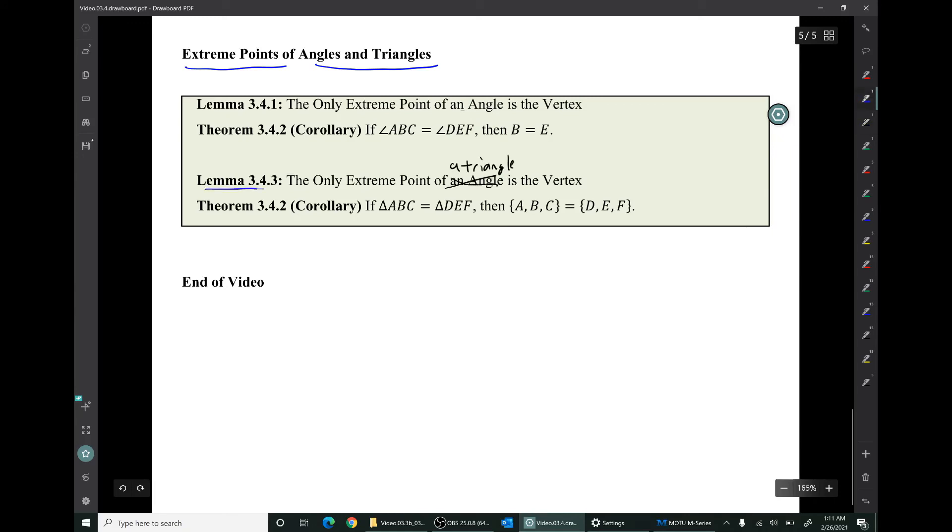Now here there's a typo. Lemma 3.4.3 says the only extreme points of a triangle, this should say, are the vertices. So a quick corollary of that is if two triangles are equal, then you know that their set of vertices are equal as sets.